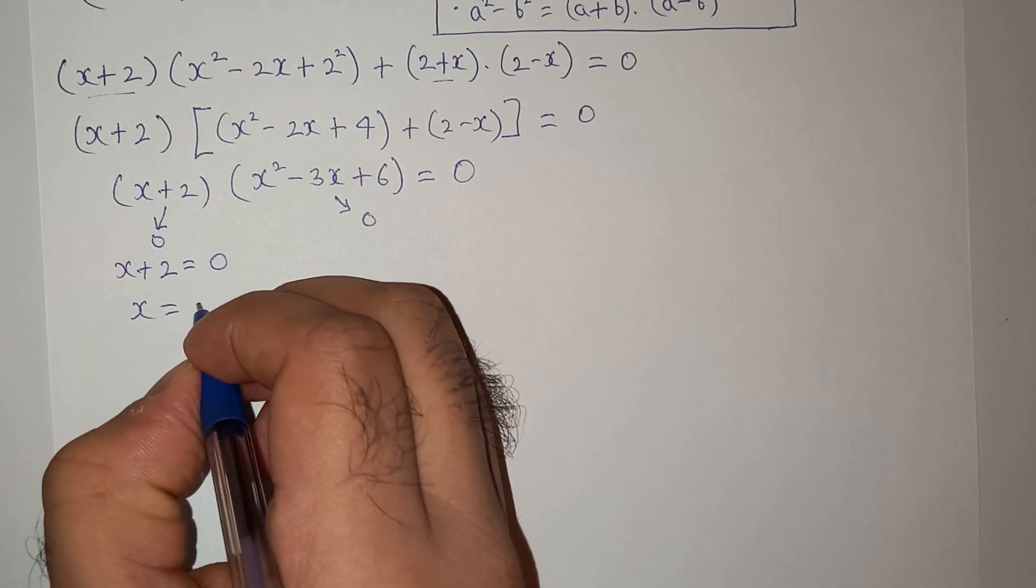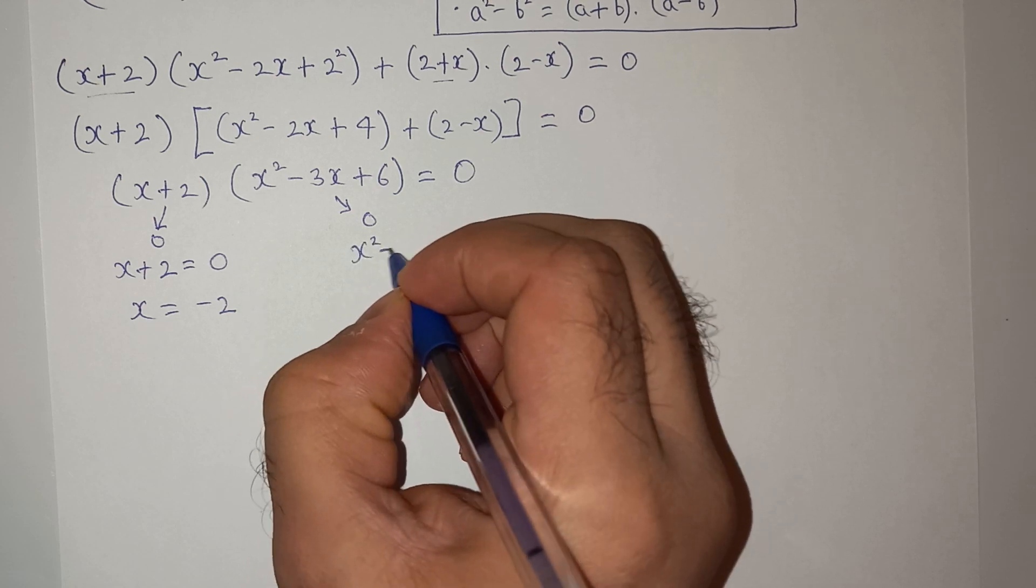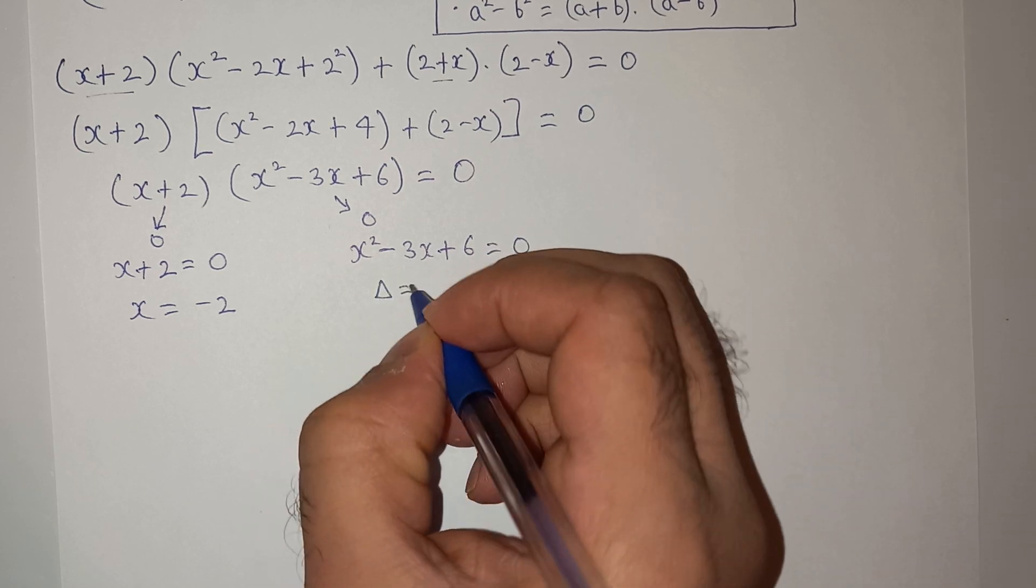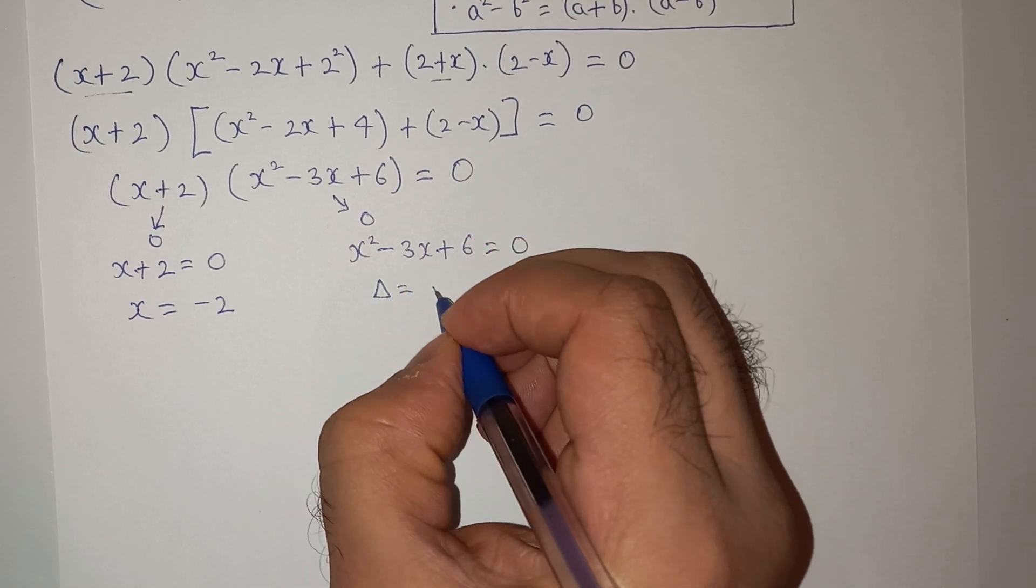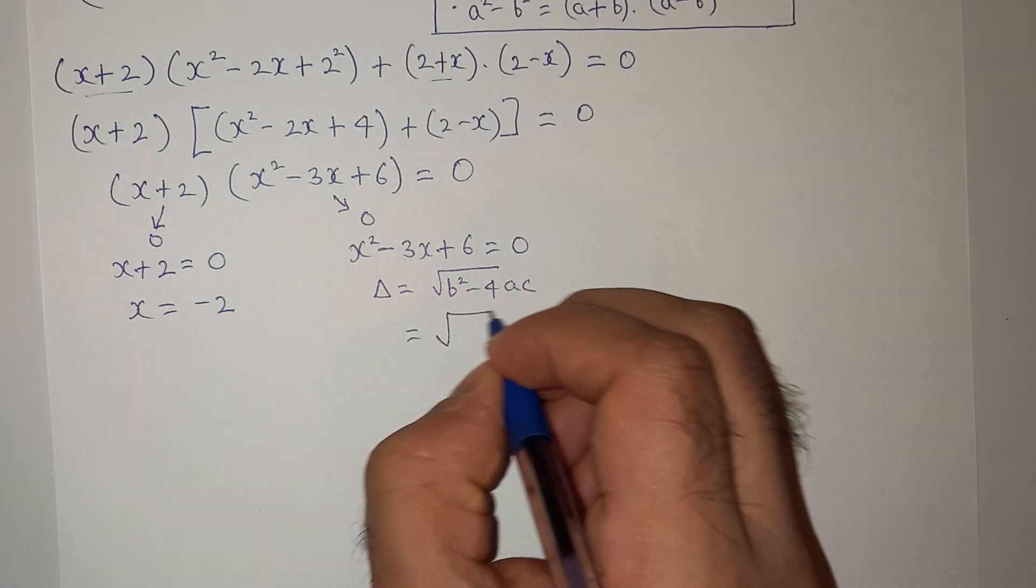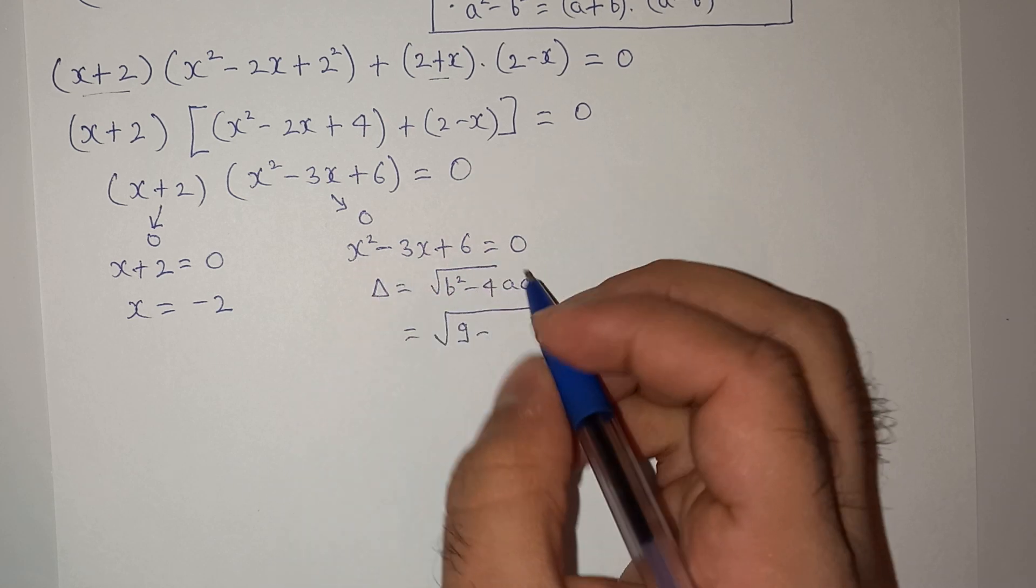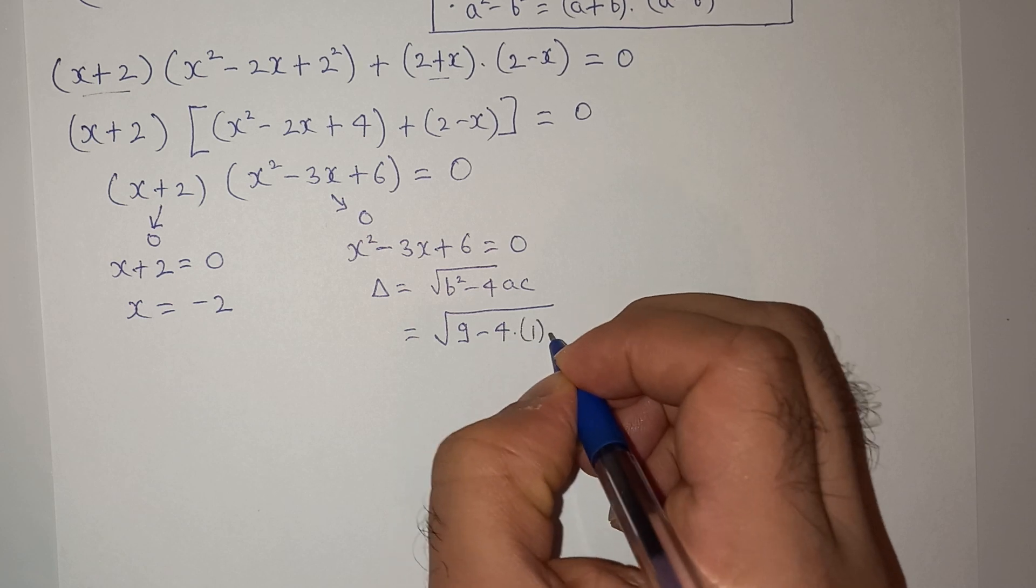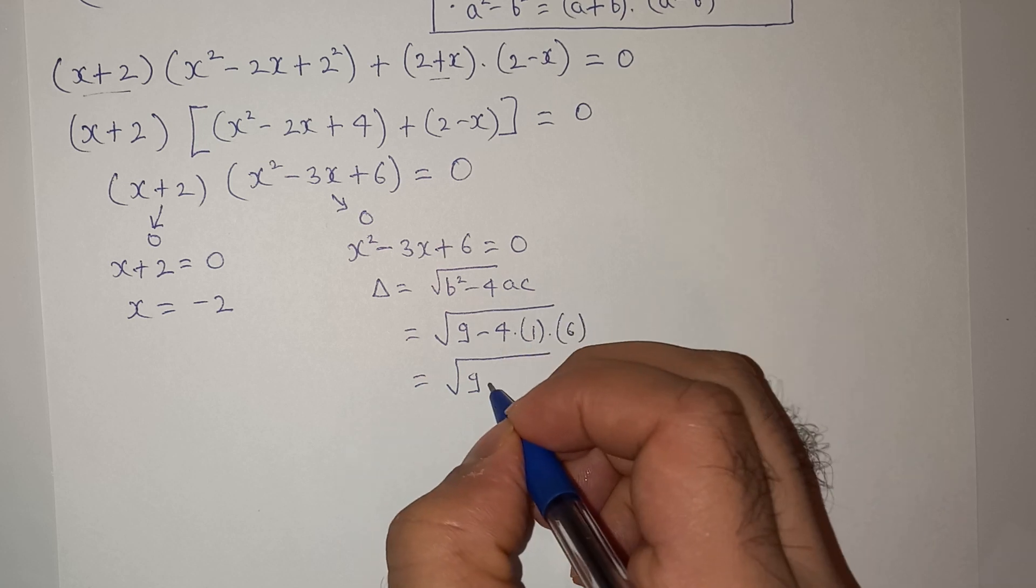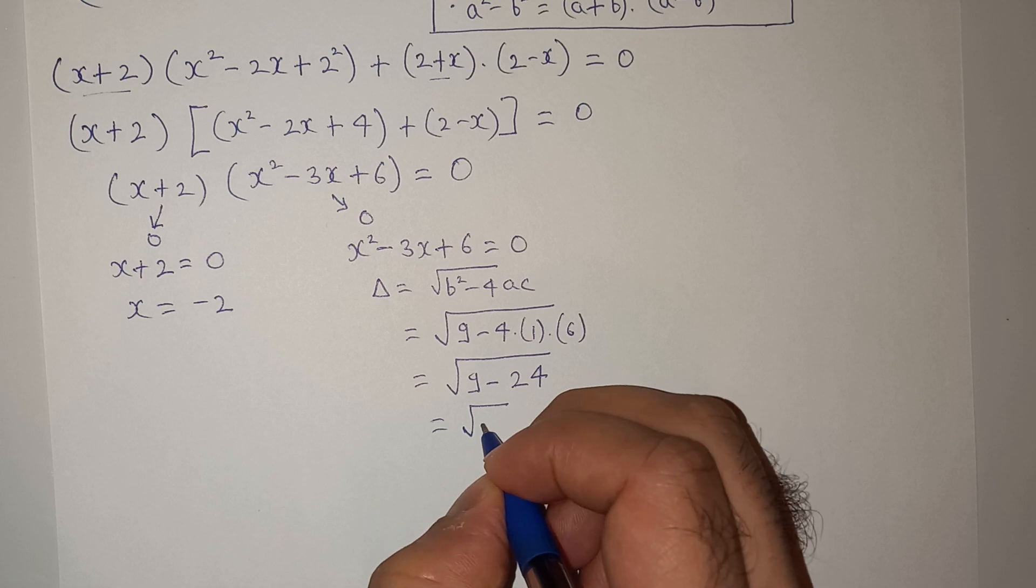So the value of x is minus 2. And from this quadratic equation x squared minus 3x plus 6 equals to 0, the delta will be root of b squared minus 4ac. So this will be 9 minus 4ac is 1 and c is 6, so root of 9 minus 24 equals to root of minus 15.